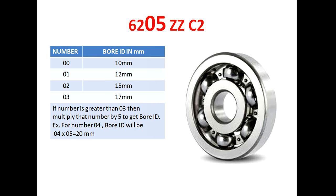The third and fourth digits of the bearing number describe the bore ID in millimeters. If 00 is mentioned, it describes a 10 mm bore ID. If 01 is mentioned, it describes 12 mm. If 02 is mentioned, it describes 15 mm. If 03 is mentioned, it describes 17 mm. If the number is greater than 03 — such as 04, 05, 06, 07, 08, 09 and beyond — then we calculate the bore ID by multiplying that number by 5.